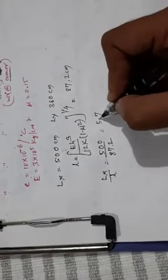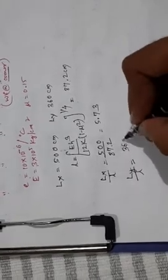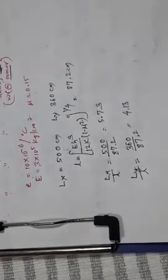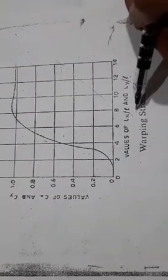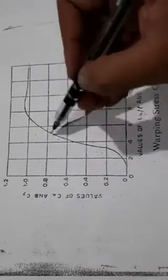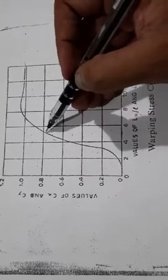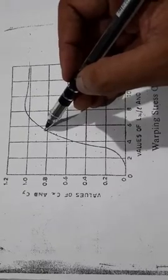So Lx by L will be 500 divided by 87.2, that will give you 5.73. And Ly by L will be 360 divided by 87.2, that will give you 4.13. Let us check the chart now.